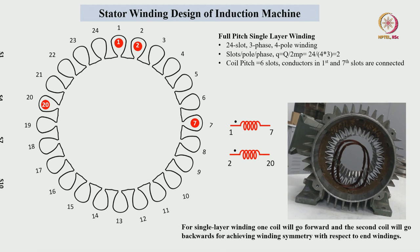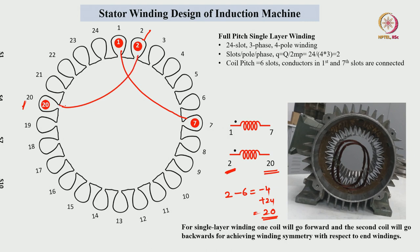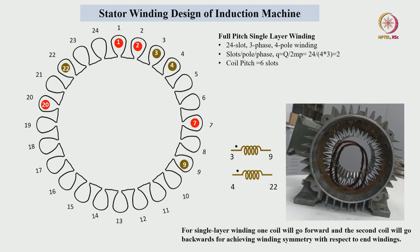Next, coil 2: one coil side is placed in slot number 2 and the other coil side in slot number 20. Slot 20 is obtained as 2 minus 6 equals minus 4, plus 24 slots gives 20. One coil goes forward and the other backward to maintain winding symmetry at the end rings. In the same fashion, 2 slots relate to A phase, then 2 slots to the next phase, and 2 slots to the third phase. Slots per pole is 6, with slots per pole per phase equal to 2.